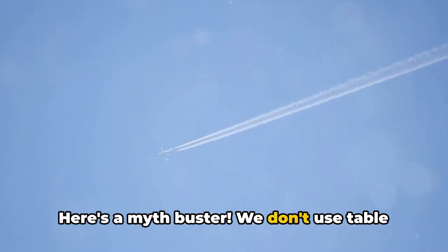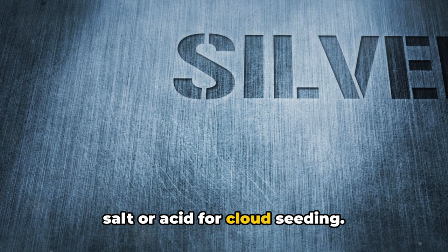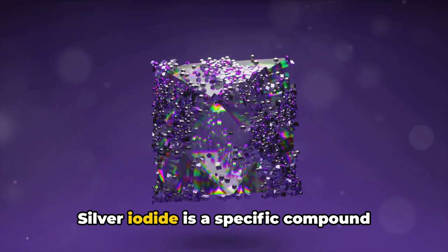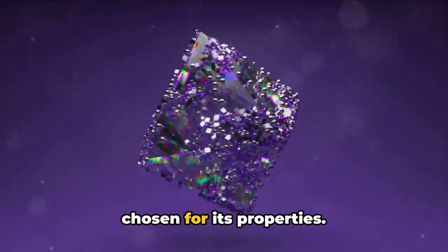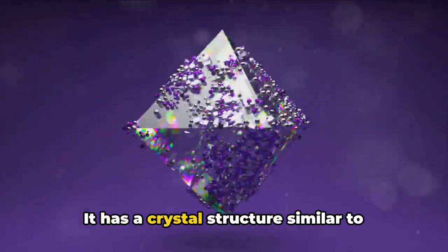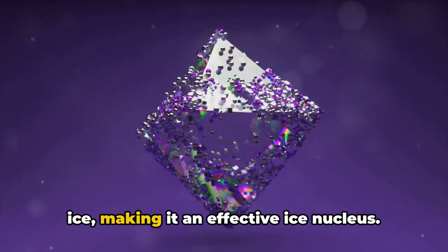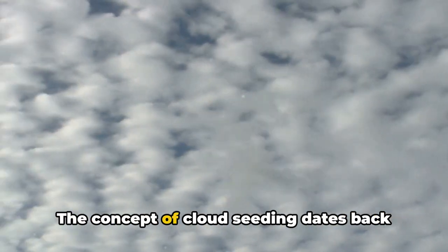Here's a myth buster: we don't use table salt or acid for cloud seeding. Silver iodide is a specific compound chosen for its properties. It has a crystal structure similar to ice, making it an effective ice nucleus.